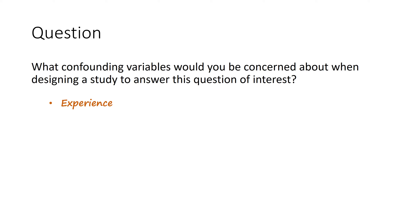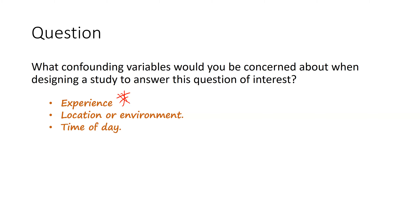Another thing to control for is location or environment — if one group does the puzzle in a noisy setting and another in a quiet setting, that could influence results. The environment needs to be the same for all treatment groups. Time of day also matters, as people may think less clearly early in the morning versus later in the afternoon. Even after randomization, these confounding variables still need to be controlled so they don't influence results.